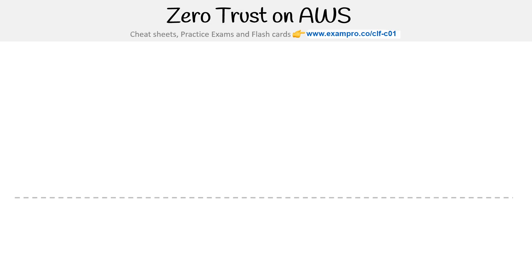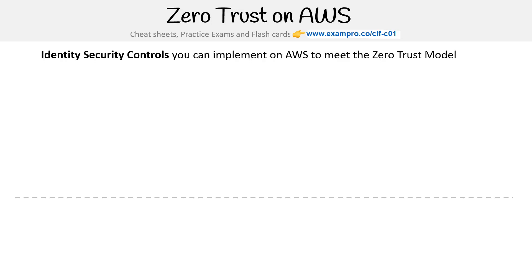We just loosely defined what the zero trust model is. So let's talk about how we would do zero trust on AWS. Zero trust has a lot to do with identity security controls, so let's talk about what is at our disposal on AWS.